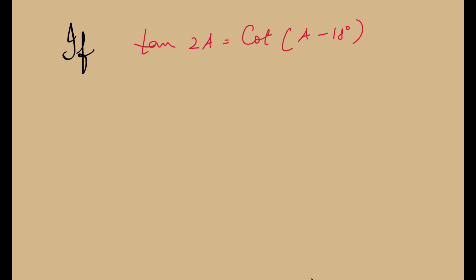Hello everyone, we are going to solve one more problem involving trigonometric ratios. We have been given that tan 2A is equal to cot of A minus 18 degrees, and we have been asked to find the value of A. Additional information which has been given to us is 2A is an acute angle, or 2A is less than 90 degrees.